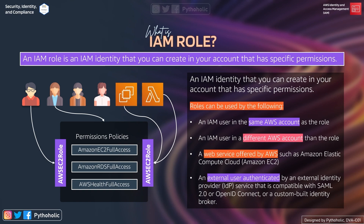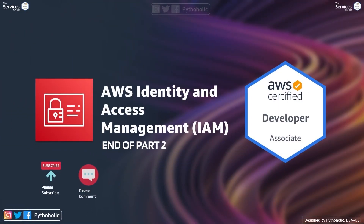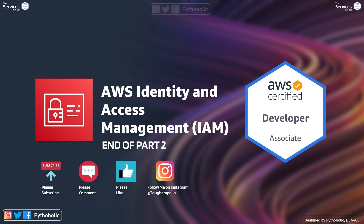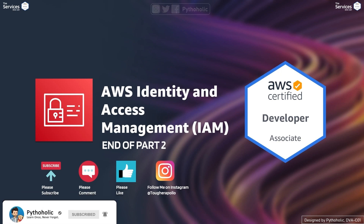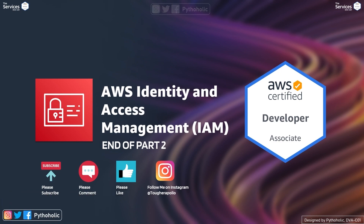Lastly, an external user authenticated by an external identity provider service that is compatible with SAML 2.0, OpenID Connect, or a custom identity broker — this is for external users authenticated by a separate identity provider. Thanks everyone for joining today's AWS session. If you haven't subscribed already, please do so, comment, and like the video — it really helps the channel grow. Stay safe, stay healthy.